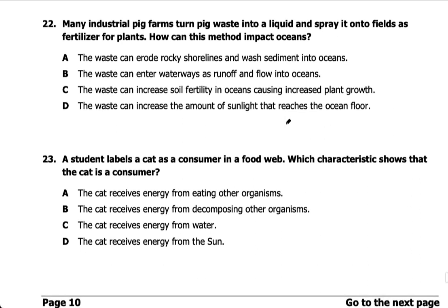Number twenty-two: many industrial pig farms turn pig waste into liquid and spray it onto fields as fertilizer for plants. How can this method impact oceans? Fertilizer is good for crops, but with a lot of rain, it could flow as runoff. The answer is B: the waste can enter waterways as runoff and flow into oceans. Anytime fertilizer gets into a water stream, that is not good for plant life or animal life in that water source.